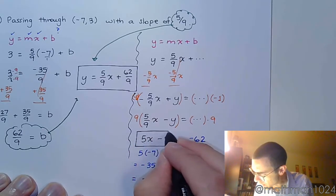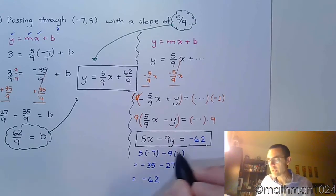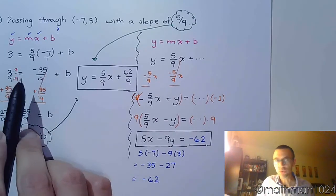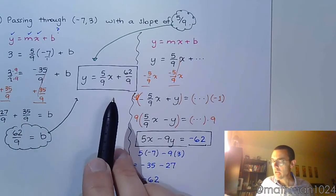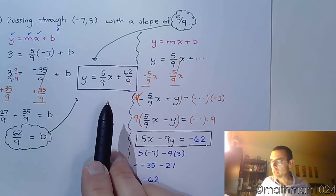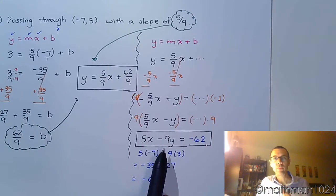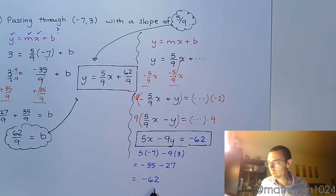And so what you can see, I hope, is I didn't have to worry about getting a common denominator. I didn't have to worry about all the stuff I was doing over here. I didn't even use the negative 7 and 3 until I got down here where everything had nice integer coefficients. So that I can plug in the ordered pair, and get my number, and be done.